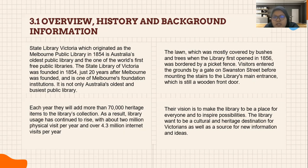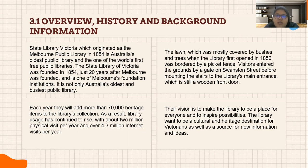The lawn, which was mostly covered by bushes and trees when the library first opened in 1856, was bordered by a picket fence. Visitors entered the grounds by a gate on Swanston Street before mounting the stairs to the library's main entrance, which is still a wooden front door. Each year they add more than 70,000 heritage items to the collection. As a result, library usage has continued to rise, with about 2 million physical visits per year and over 4.3 million internet visits per year. The vision is to make the library a place for everyone and to inspire possibilities, serving as a cultural and heritage destination for Victorians.